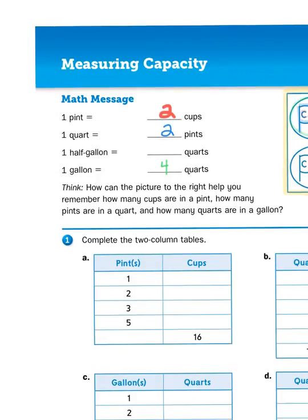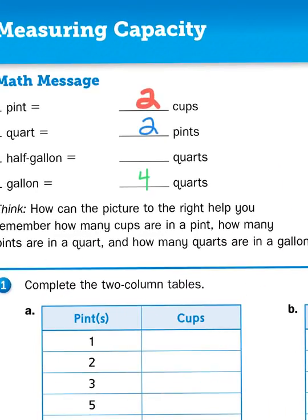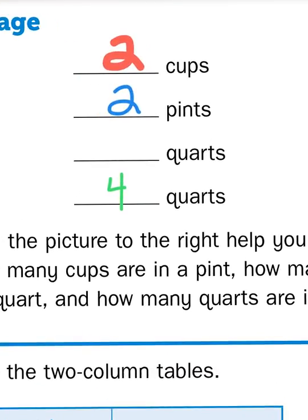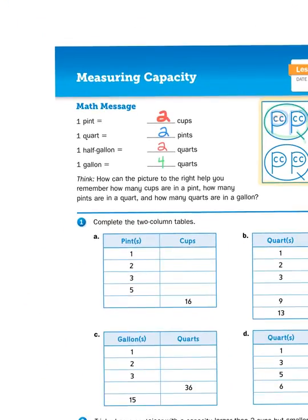Now, the one thing that I did not demonstrate is how many quarts are in a half gallon. Well, when you split something in half, you're basically dividing it by two. So that just means we're going to divide four by two, which would also give us two. So if you can skip count by twos and fours, then you can convert between cups, pints, quarts, and gallons.